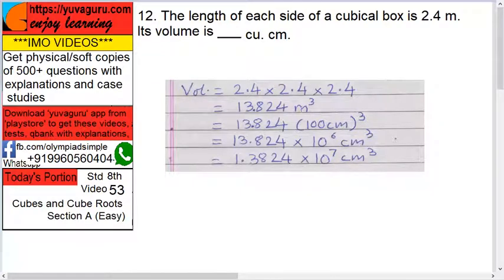And centimeter relationship: 1 meter equals 100 centimeters, so take it in bracket 100 centimeter cube. Now it is 13.824 into 100, means 10 raised to 2, and this is 3. This multiplication 2 into 3 is 6.